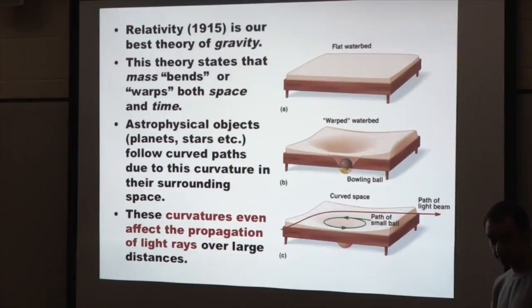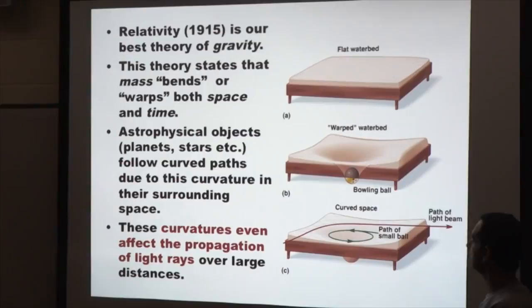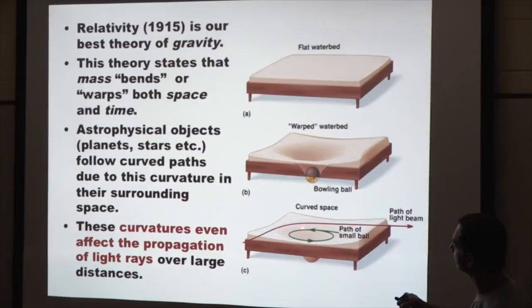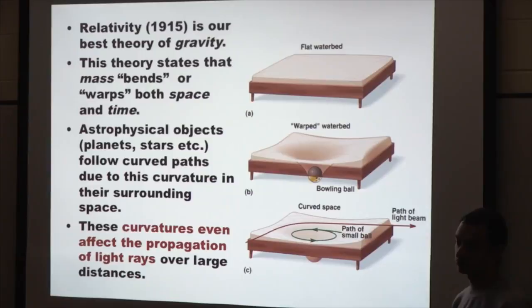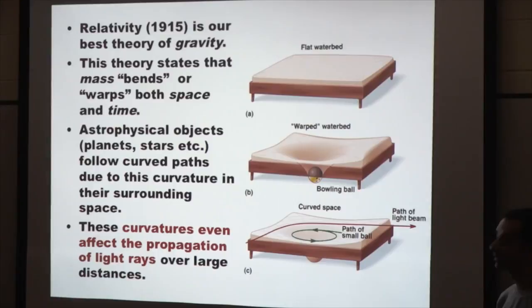If you think about it this way, you realize something new: not only would planets and matter move around the sun in this fashion, but even a light ray passing by would have to bend in the presence of large amounts of matter, simply because light also propagates through the same space-time. If space-time is bent, then light also has to take a bent path.